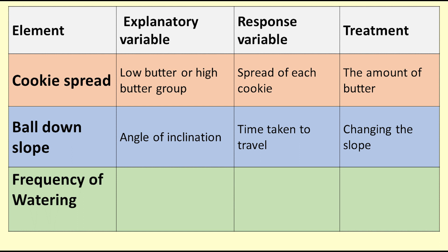For the ball and slope experiment, the explanatory variable measures the slope of the plane or angle of inclination. The response variable is the time taken for the ball to travel down the plane. The treatment is changing the slope.